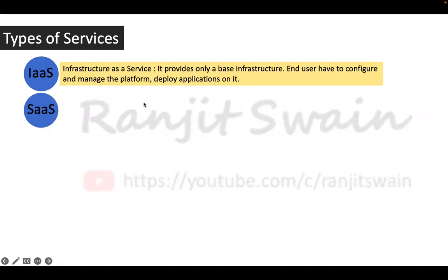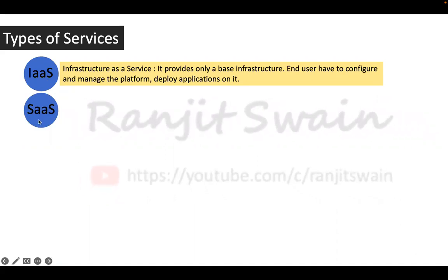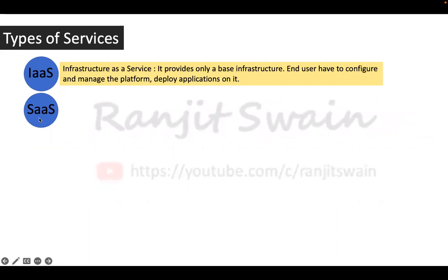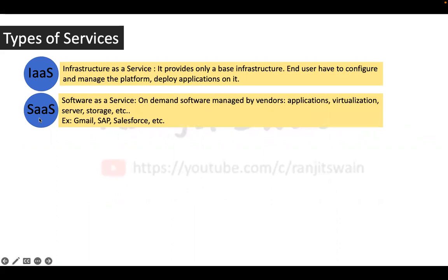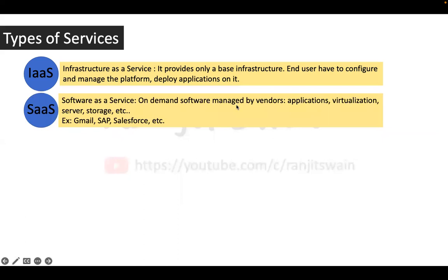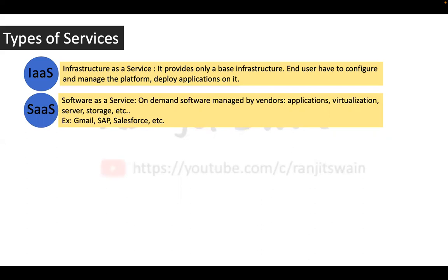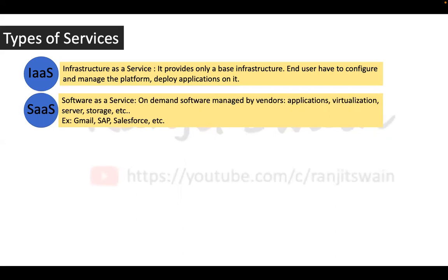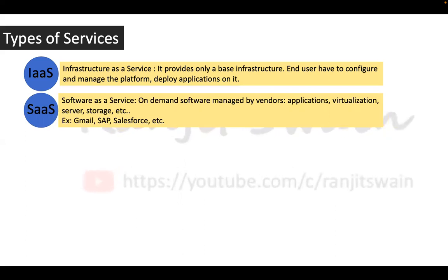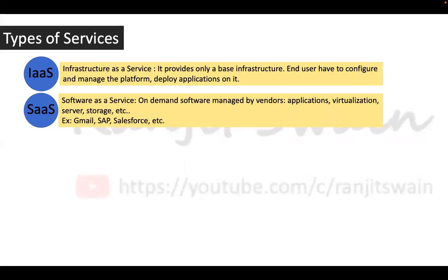The second service is SaaS — Software as a Service. SaaS is on-demand software managed by vendors: applications, virtualization, server, storage, etc. For example, Google provides Gmail — Gmail.com is a web application, a web email service we use. Google provides that service. That is software as a service.